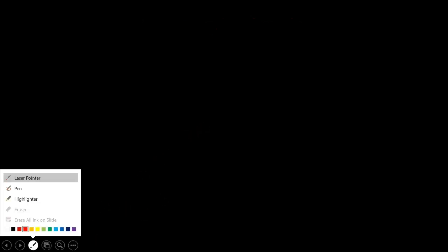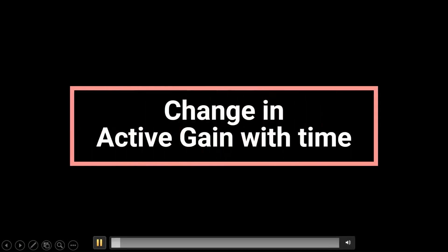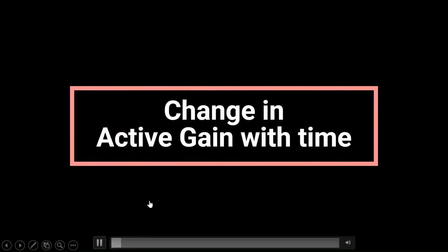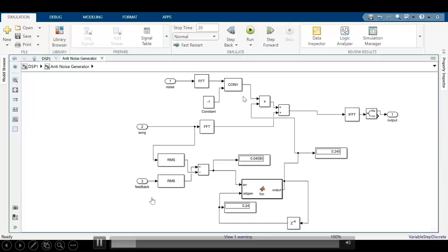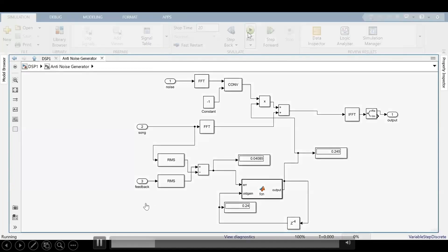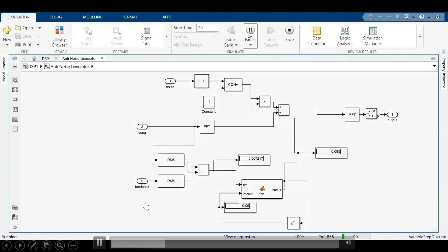This is the output. We are seeing the change of active gain with time. We set the passive gain as 0.7. So, as you can see our active gain is increasing. It increases till 0.7 and then the error becomes so less that we get an error.